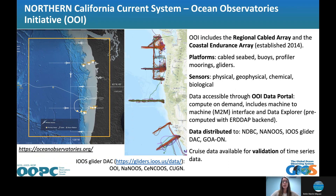Second, we have the Ocean Observatories Initiative, or OOI. At this site, OOI includes a regional cabled array — shown here as a white line — and the Coastal Endurance Array, which is an array of gliders flying across-shore and along-shore, established in 2014. Platforms associated with OOI include a cabled seabed, buoys, profiler moorings, and gliders. There is a variety of sensors measuring physical, geophysical, chemical, and biological parameters. The data is made accessible through the OOI data portal, distributed to various partners and agencies, and they also provide cruise data to validate the time series.